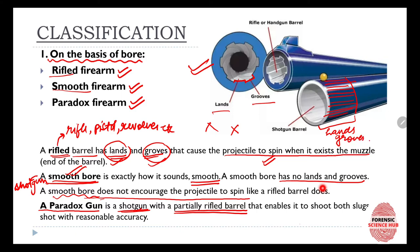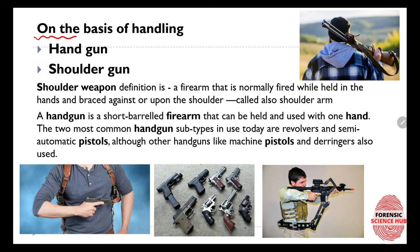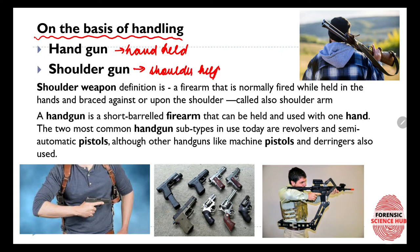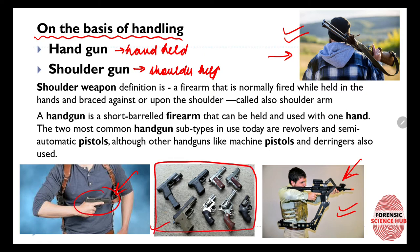Next comes classification on the basis of handling — how the firearm is held. It can be either handheld, known as a handgun, or it can be a shoulder gun, which is shoulder-held. Firearms with a very large barrel cannot be handheld and must be shoulder-held.